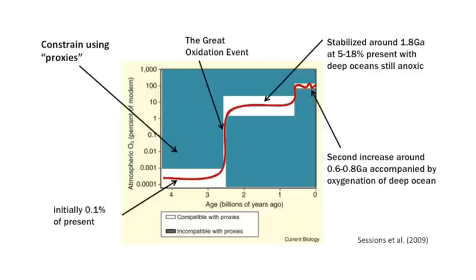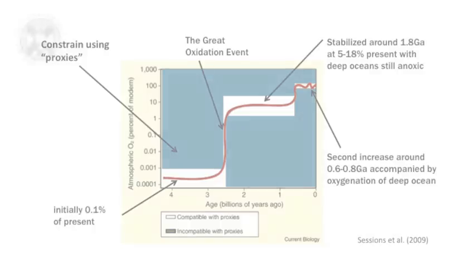First, a very early period from the formation of the Earth through to about 2.4 billion years ago, when oxygen levels were very low — much less than 0.1% of the Earth's atmosphere. Then about 2.45 billion years ago, a sudden and abrupt rise — at least on geological timescales — in atmospheric oxygen to about 10% of the present atmospheric level. And then roughly about 500–600 million years ago, another rise in atmospheric oxygen up to present-day levels, around 20% of the Earth's atmosphere, although it has varied over the last few hundred million years.